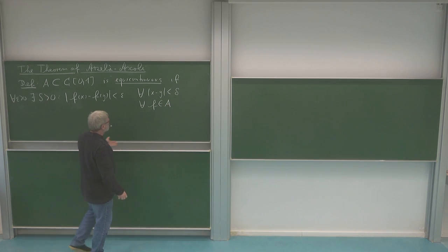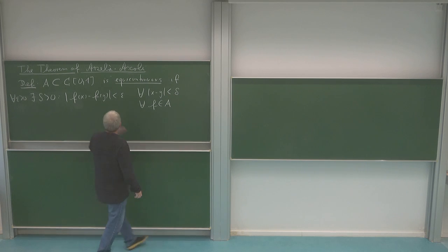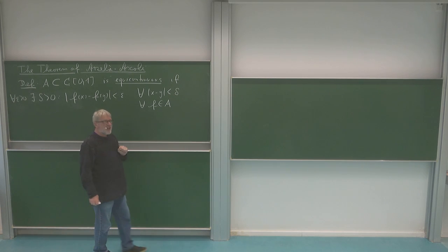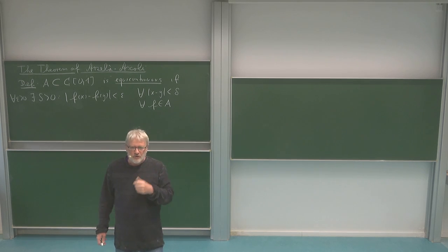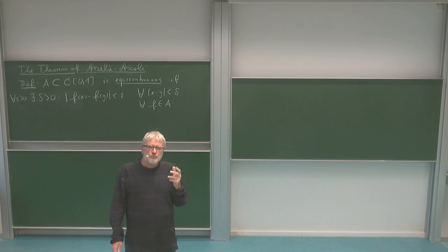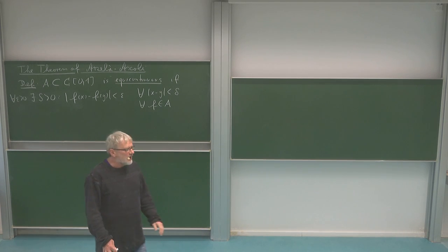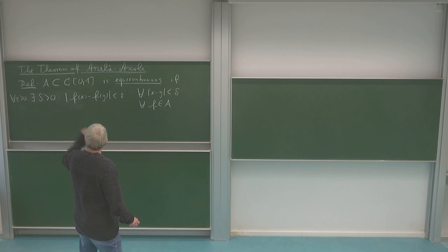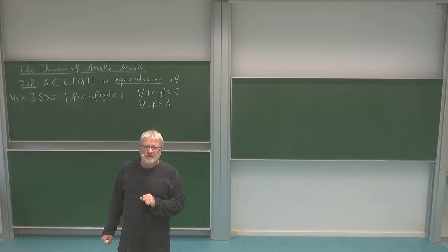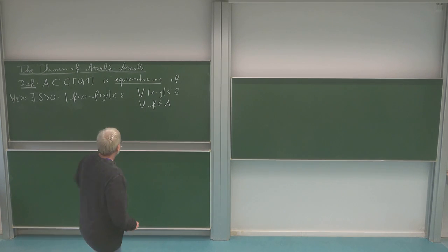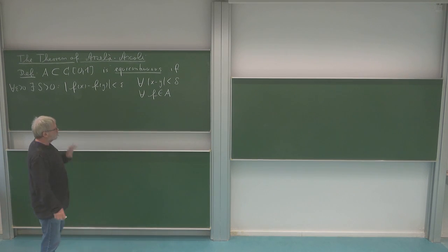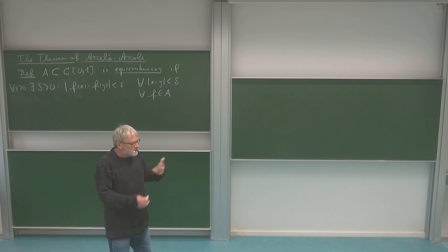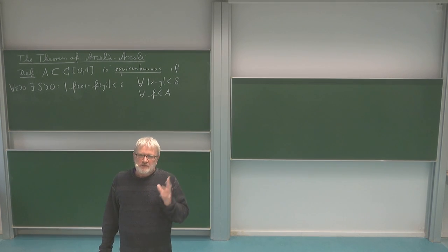Of course, continuity would mean that there is a delta, but this delta depends on f. The point is the delta should not be dependent on f — it should be the same. It is possible to choose the same delta which works for all f in my set A. So: one delta rules them all. For each epsilon there is such a delta which works for all of them. That's equicontinuity.